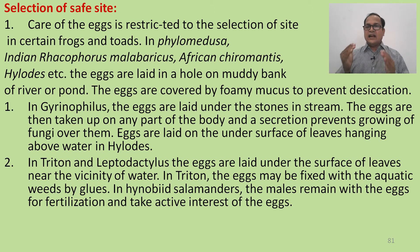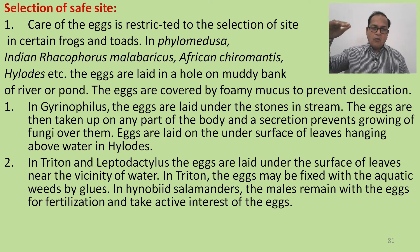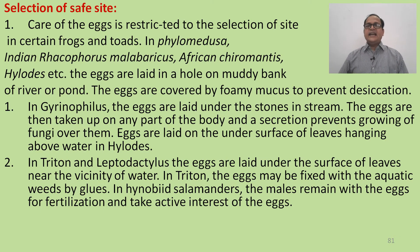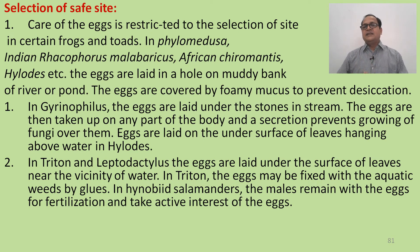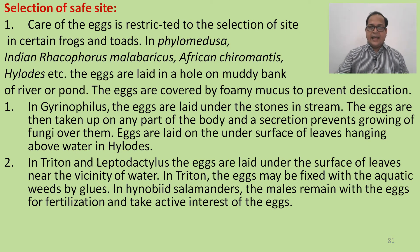Eggs are laid on the under-surface of leaves hanging above the water in hylurids. In Triton and Leptodactylus, the eggs are laid under the surface of leaves near the vicinity of water. In Triton, eggs may be fixed to aquatic weeds by glue. In the Haino weed salamander, the male remains with the eggs for fertilization and takes an active interest in them.